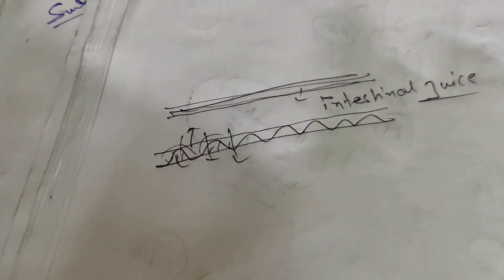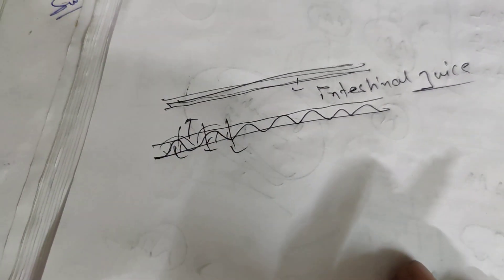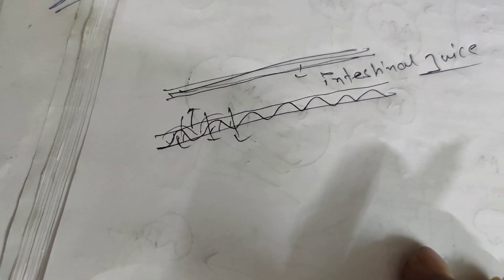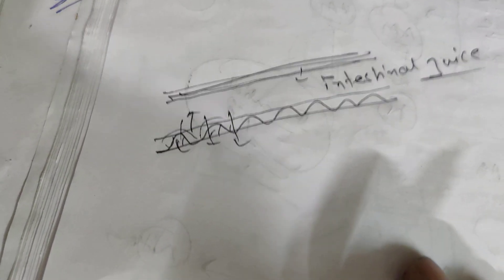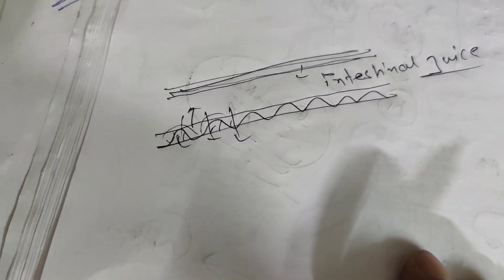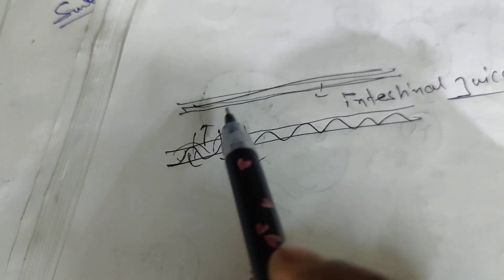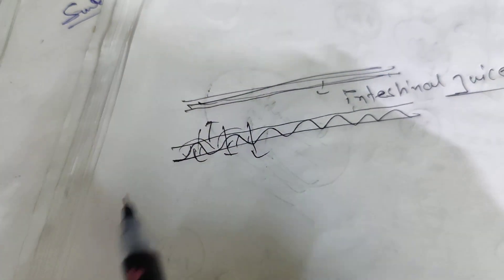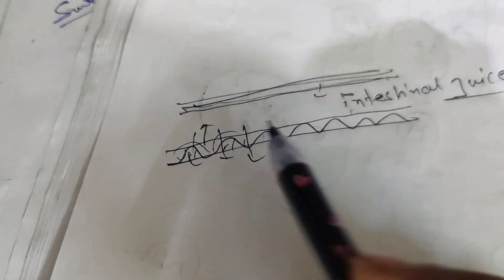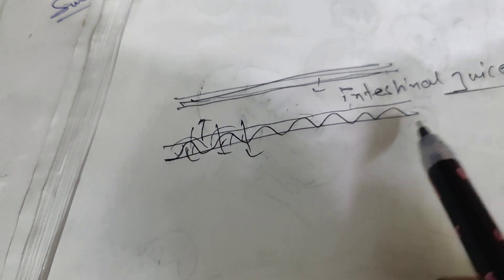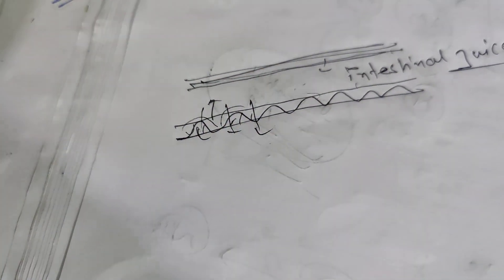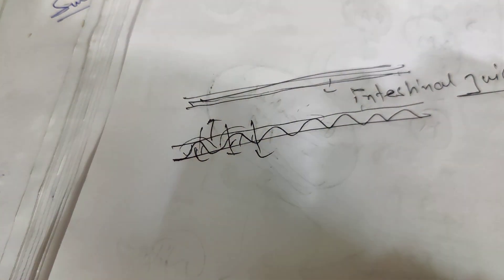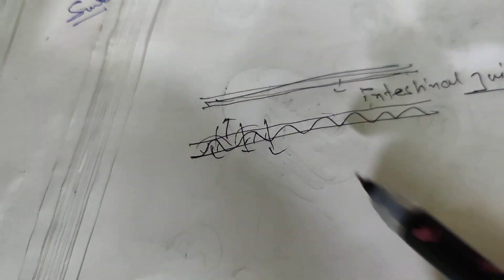Which three juices are released in the small intestine? Bile juice — from the liver or gallbladder; pancreatic juice — from the pancreas; and intestinal juice — secreted from the lining of the intestine into the cavity of the intestine. Villi are a different thing. Is this clear?